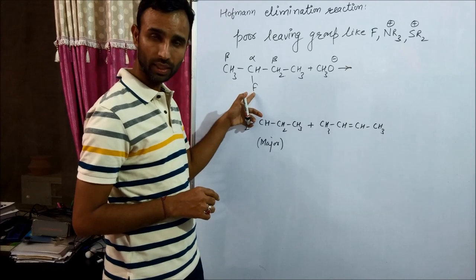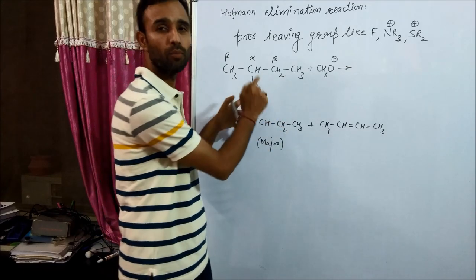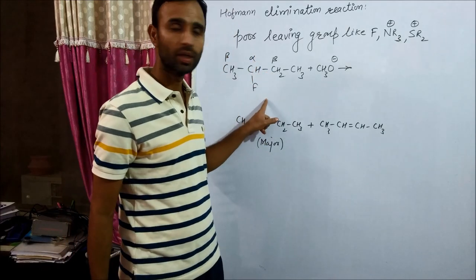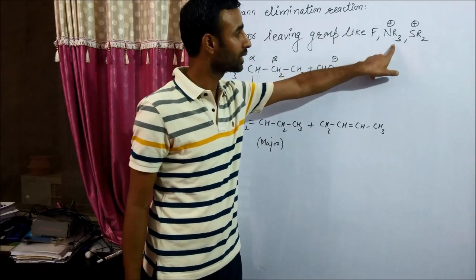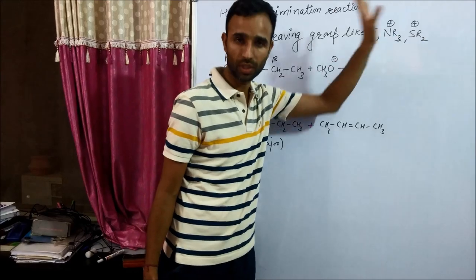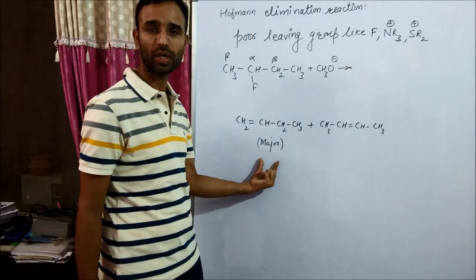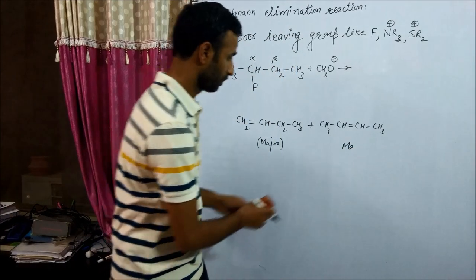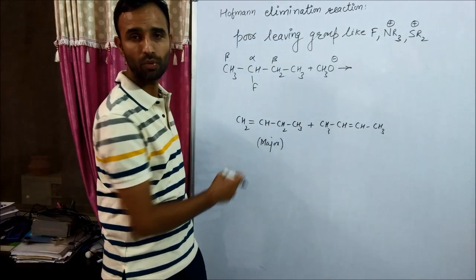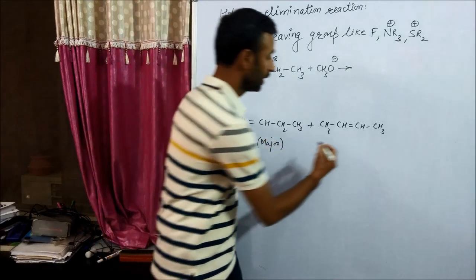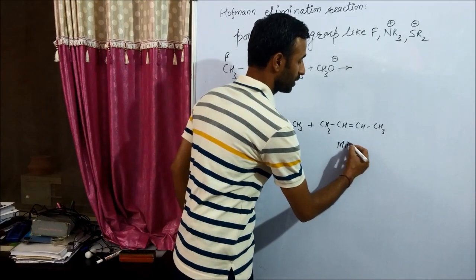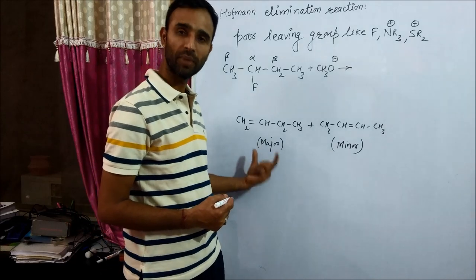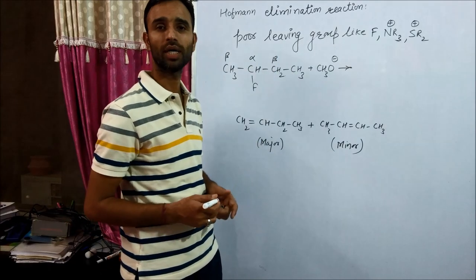This is because we have fluorine as the leaving group, which is a poor leaving group. When the leaving group is fluorine, NR3 positive, or SR2 positive, the Hofmann product dominates over the Zaitsev product. The Zaitsev product is the minor product and the Hofmann product is the major product.